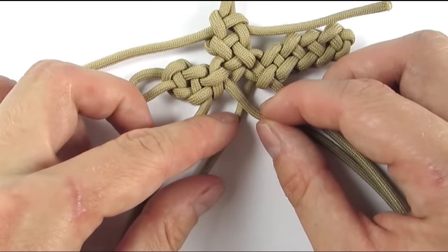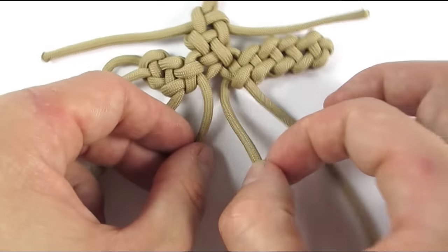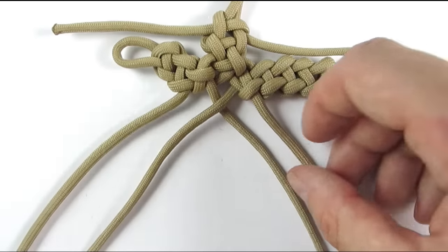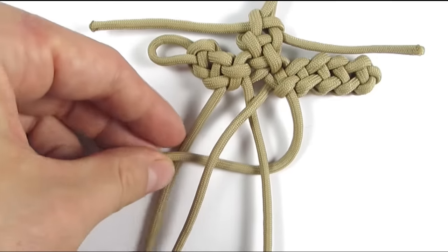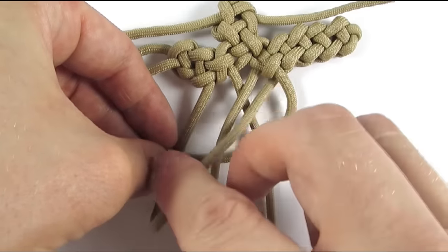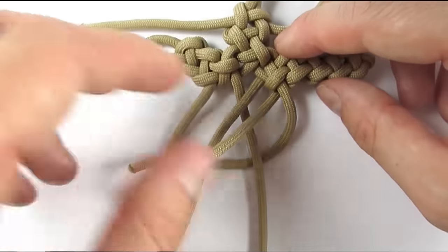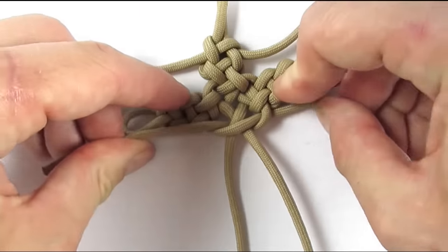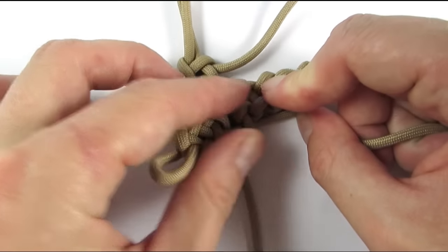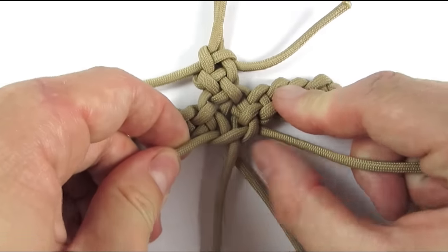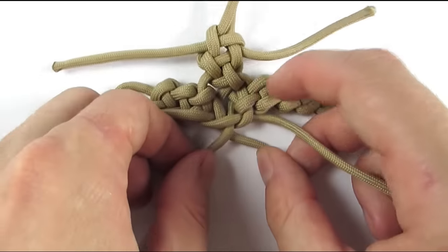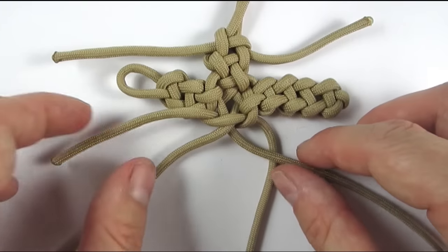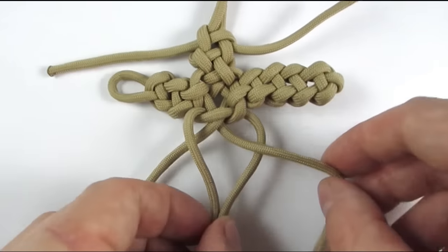On the other side, we need to make sure that we have an over one, under one sequence in the middle. So I'm going to place my right cord over the left, so you can see in the middle things are lined up. And then we start with a cobra knot. Now we tie two vertical crown knots and with that we're going to complete our paracord cross.